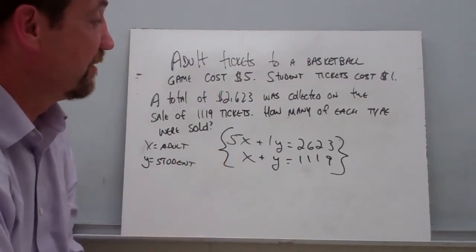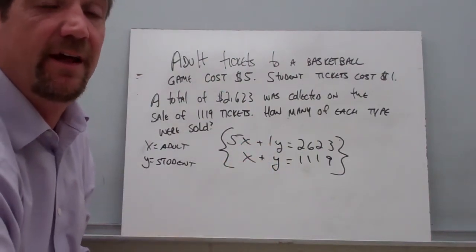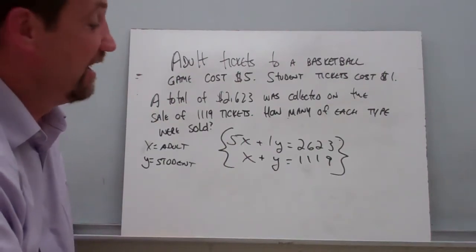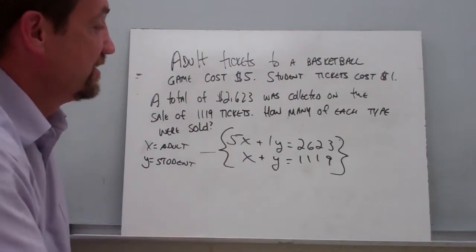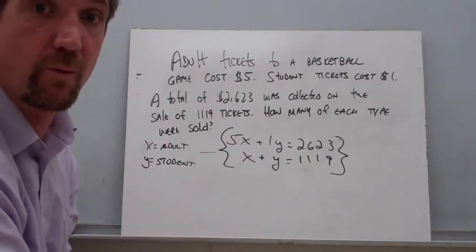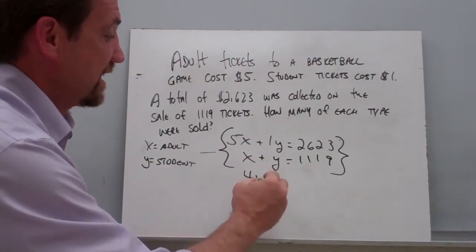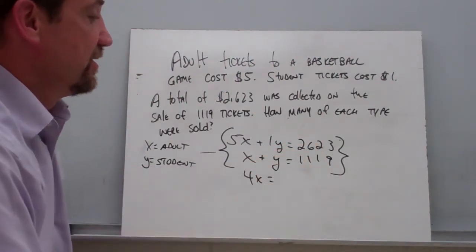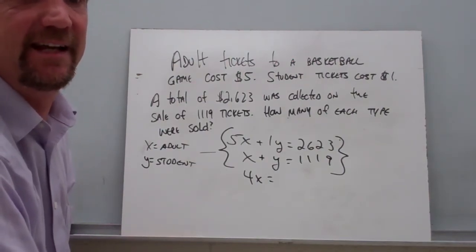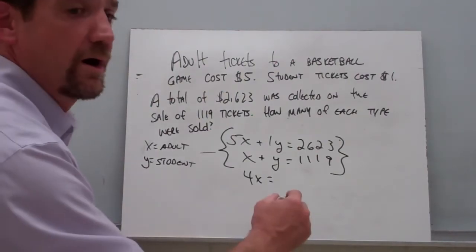When you look at this system of equations, you notice that you have positive 1Y in both equations. That means this system would be very easy to solve by elimination. If we subtract these two equations, we will eliminate the Y — 1Y minus 1Y, no more Y. So let's do that. 5X minus 1X is going to give us 4X, and 2,623 minus 1,119 is going to give us 1,504.